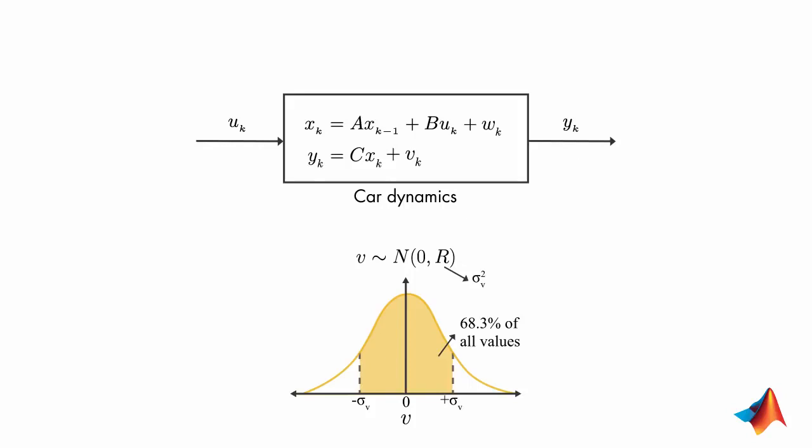Similarly, the process noise is also random and assumes a Gaussian distribution with covariance q. Now we know that the measurement is noisy and therefore what we measure doesn't quite reflect the true position of the car.